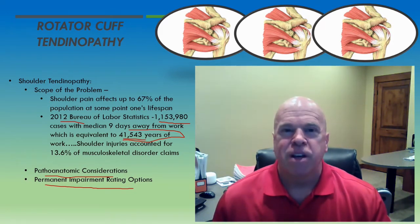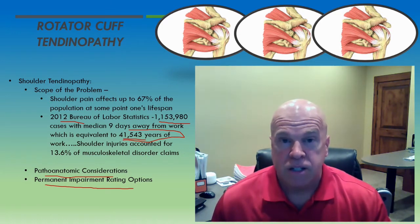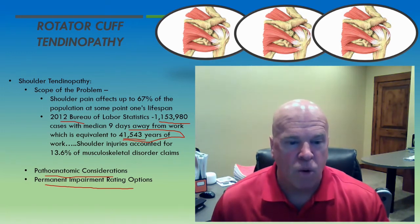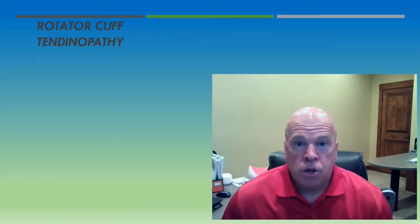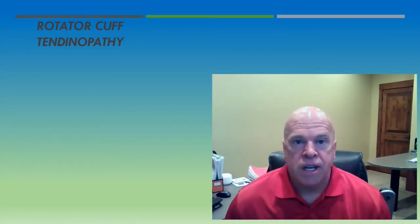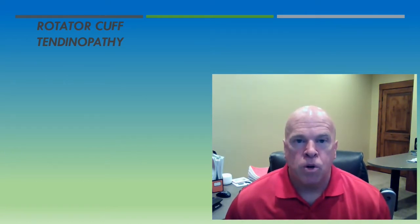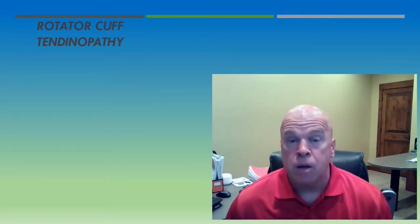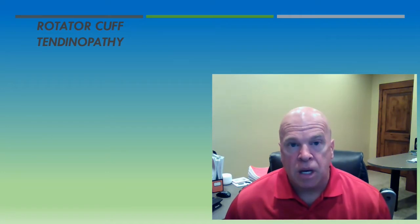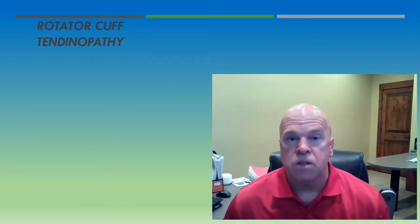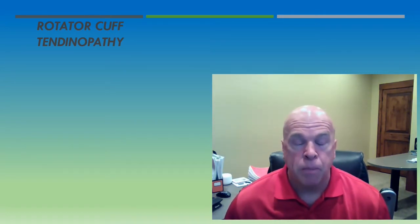Once we handle that discussion, I want to share some options available for rating examinees for permanent impairment when confronted with examinees who have bona fide and active symptomatic rotator cuff tendinopathy at the permanent and stationary evaluation. I want to share how you can rate these examinees and provide an accurate permanent impairment rating. So let's begin today's discussion in session number two on rotator cuff tendinopathy, considering the pathoanatomic considerations.